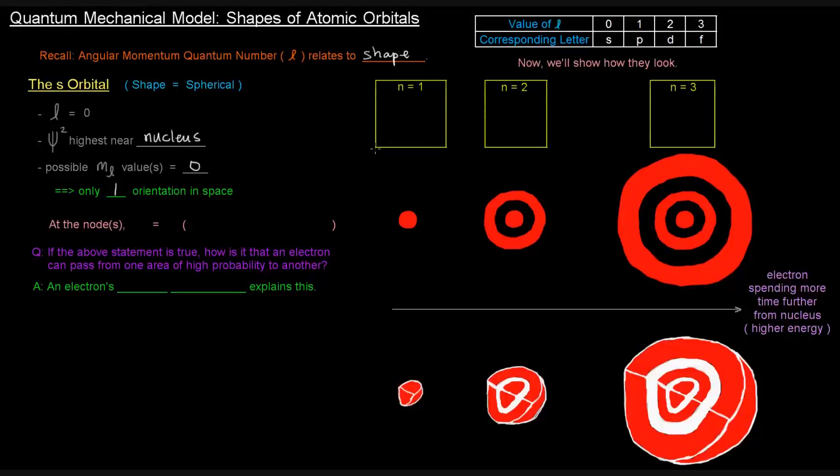Here I've drawn the basically three S orbitals for n equals 1, n equals 2, and n equals 3. The n equals 1 is represented here by this little red dot. That's just in 2D. We can see that the red portion is the area of high probability.